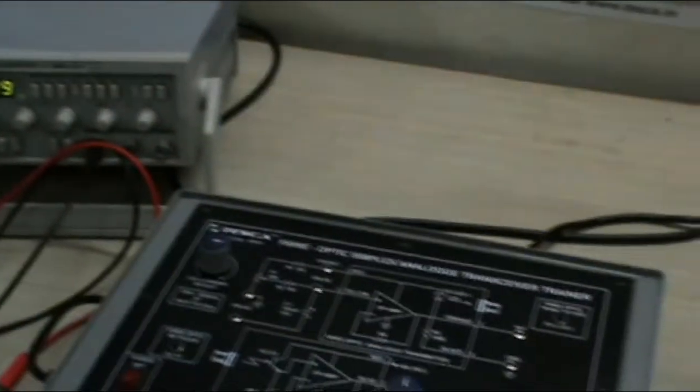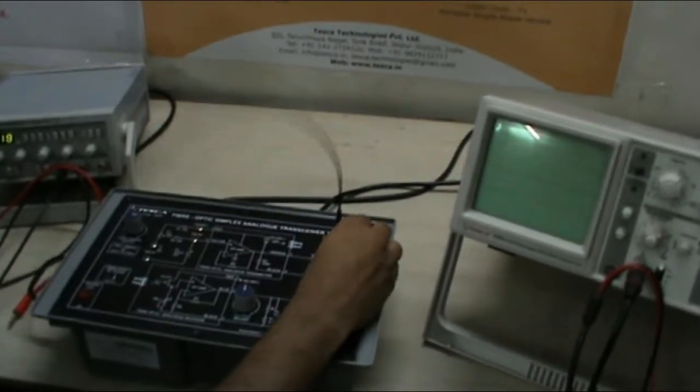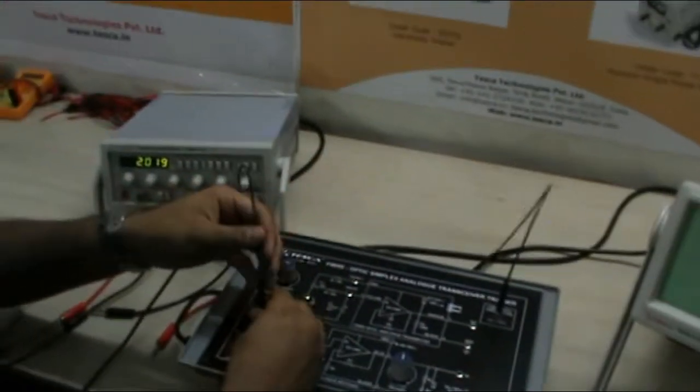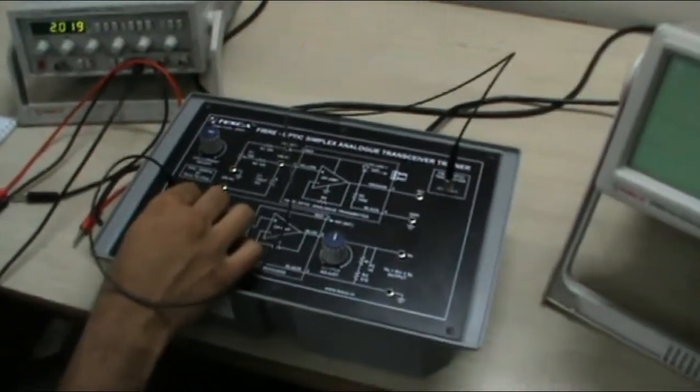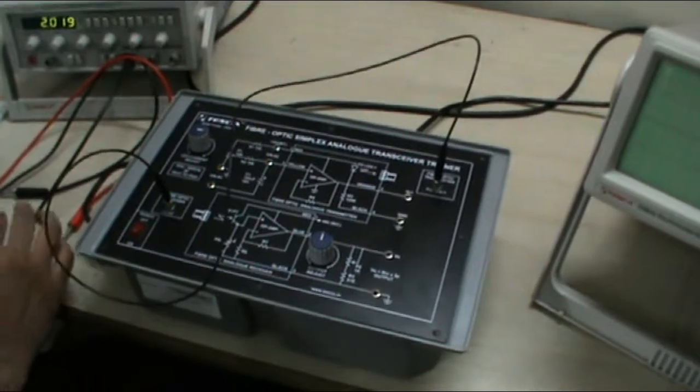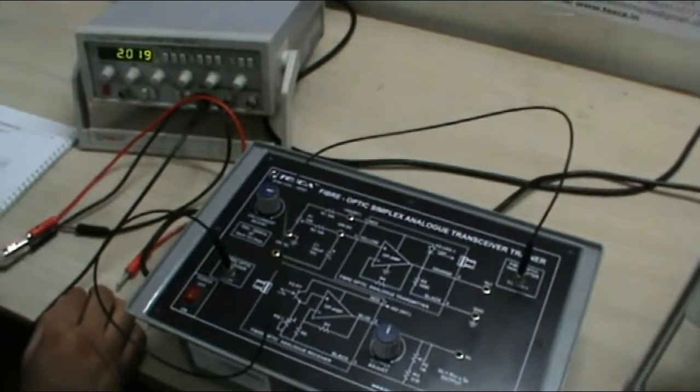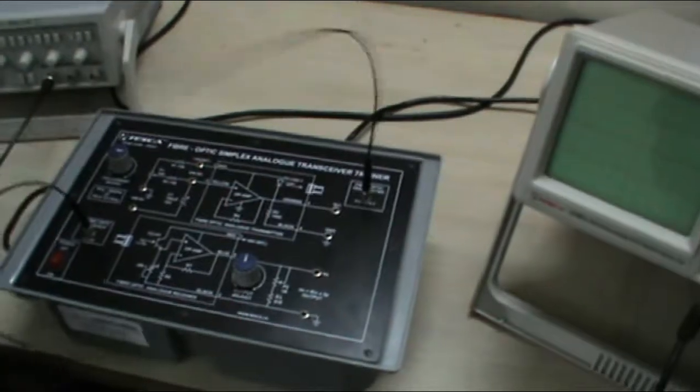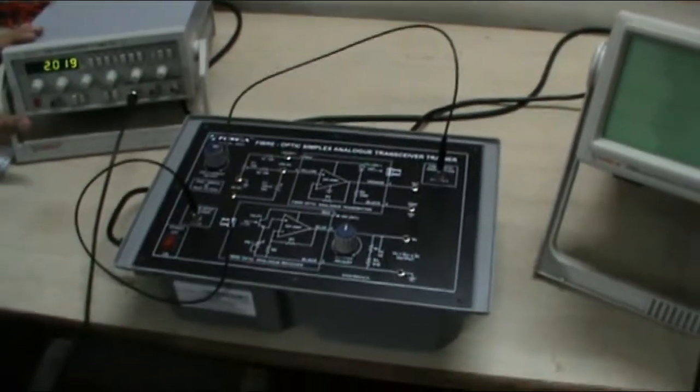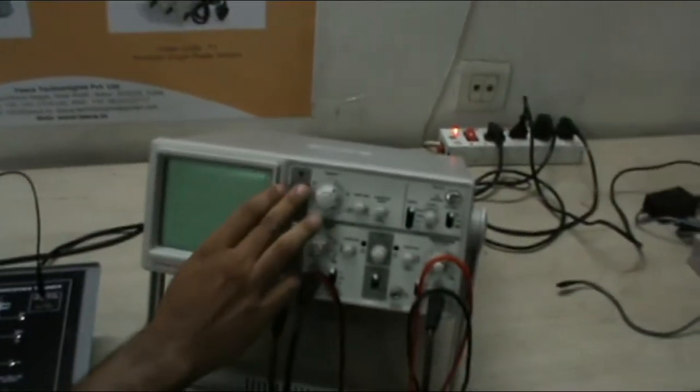First of all connect this FOLED1 Fiber Optic Cable to FOLED1 point and the other part to the FOPT receiver point. Now we will take the input through this audio generator, function generator through this CRO patch cable and we will see the output on the CRO, the output waveform.